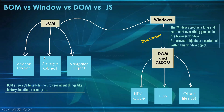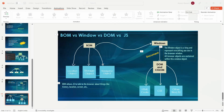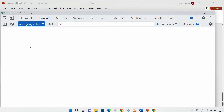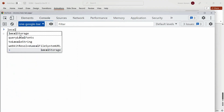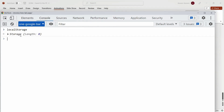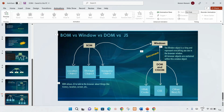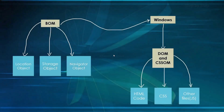Now suppose if I just want to access the storage object which is provided by BOM, then in JavaScript we can simply write localStorage and we can get the result. As it is also used in backend programming, if I want to access localStorage I can simply write like this and I will be getting the result. So it is completely independent — it is not like without BOM or without Windows we cannot write JavaScript.